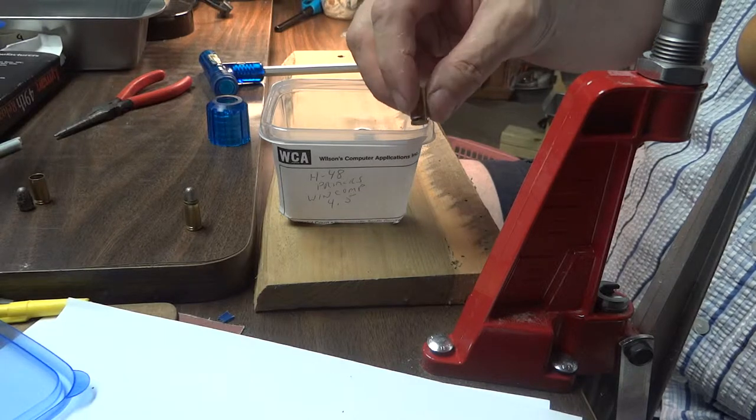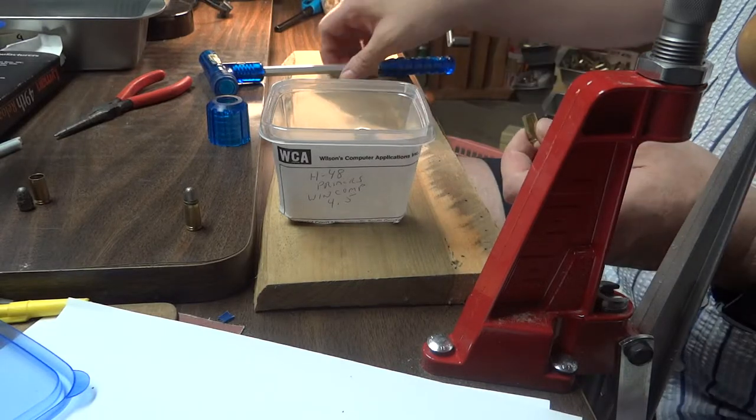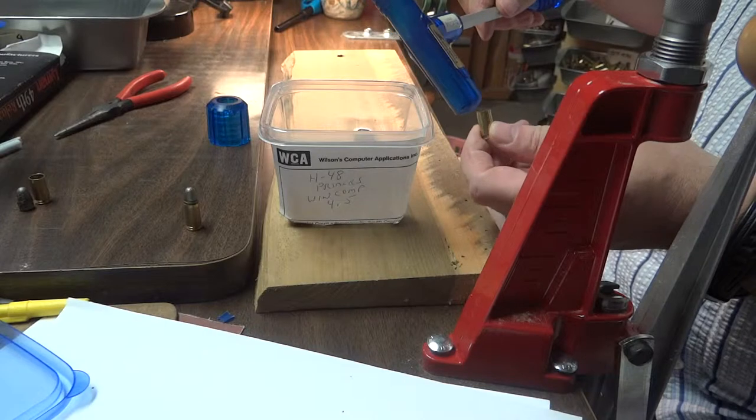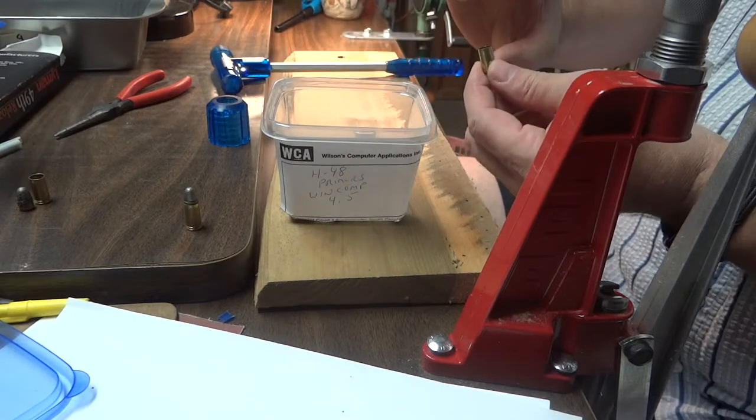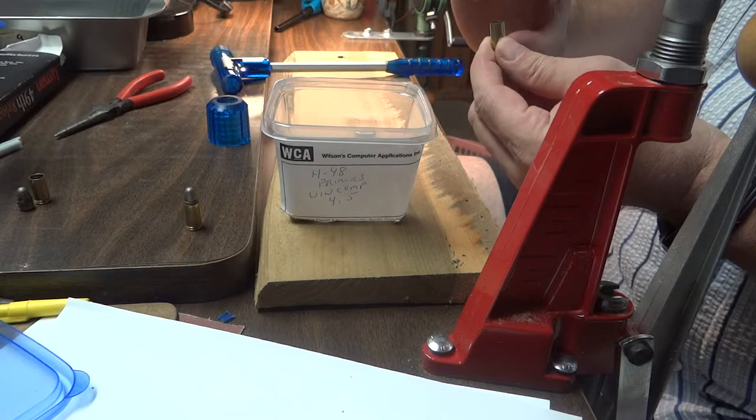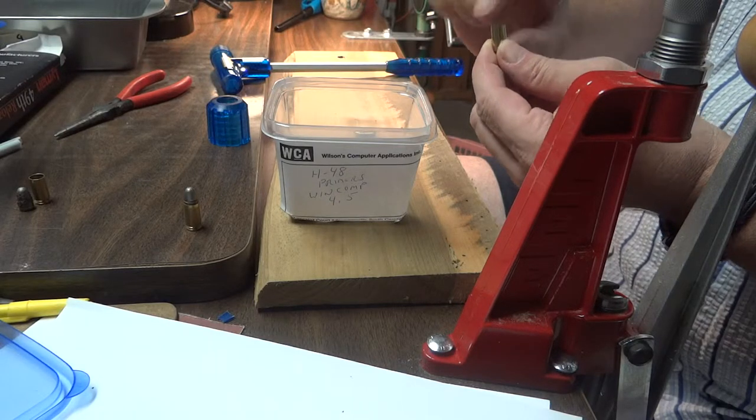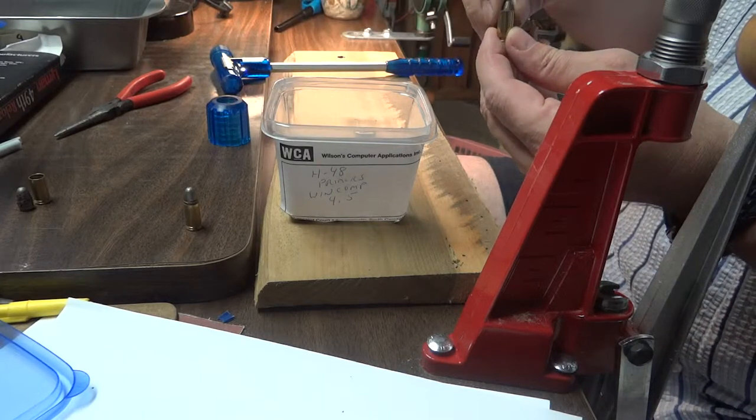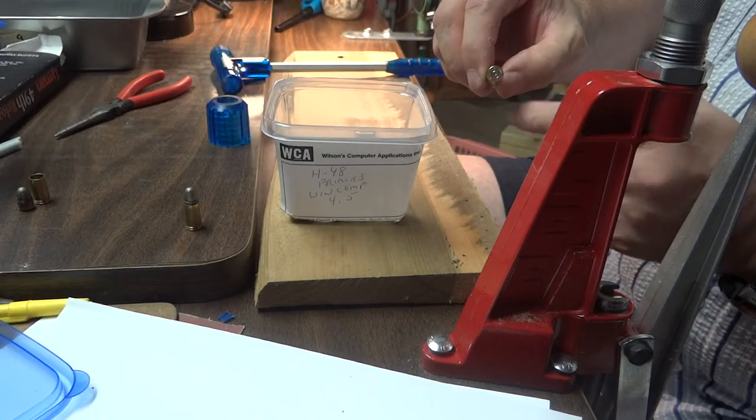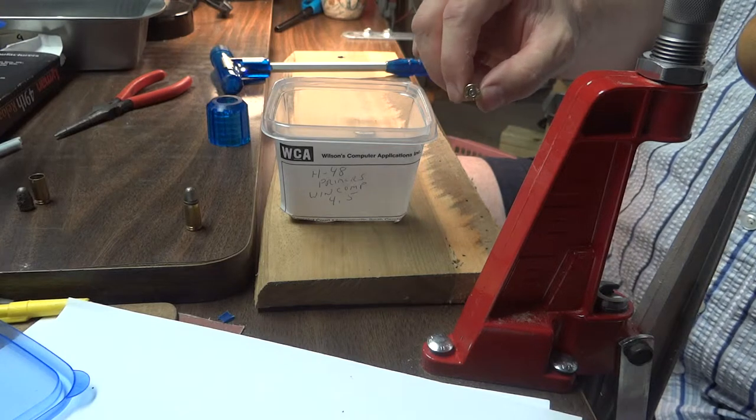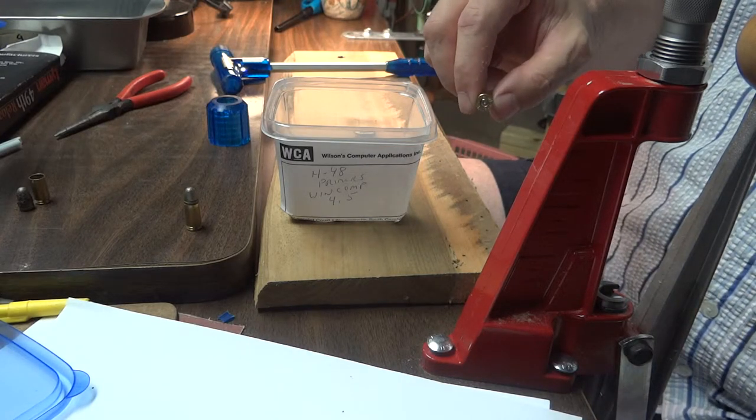But everybody that reloads should get this bullet puller so they can take apart some of their mistakes. Sometimes you overly press a bullet so it's too short to be safely fired. And other times like this one the primer was struck but the bullet just for whatever reason would not go bang.